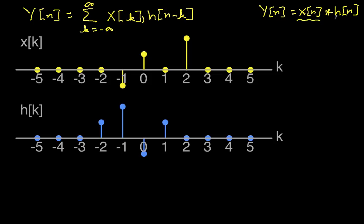This notation where we've got x of n and h of n is somewhat misleading, because to compute y of n we need x and h with indices going from minus infinity to infinity in the most general case. In this summation, we've replaced the n's by k's. If I want to graph x of k rather than x of n, I just take x of n and replace n by k — it's an arbitrary variable. The way we'll do this is we'll pick a value for n, keep it constant, evaluate the summation, and that gives us y of n.